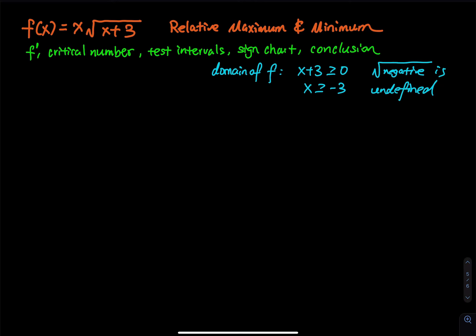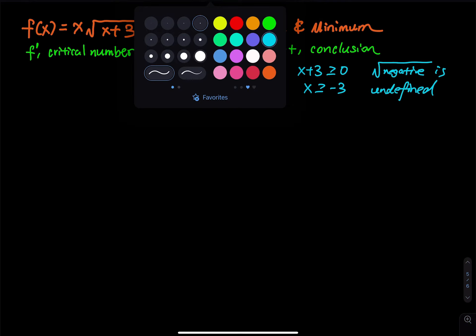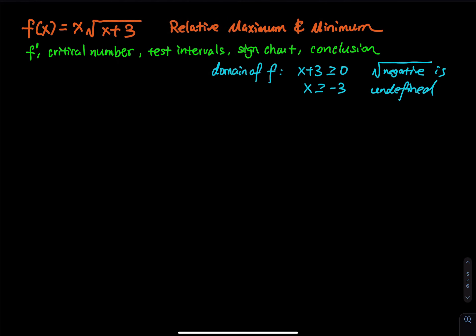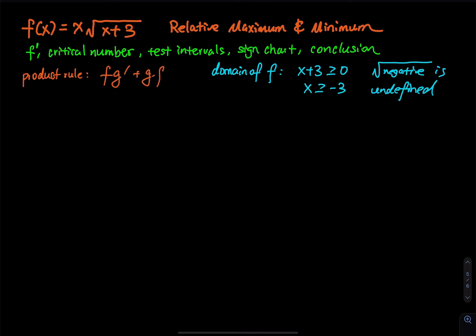The next step is to find f prime. We have f of x equals x times a square root term, so we have to use the product rule. The product rule states: if you have f times g, the derivative is f times g prime plus g times f prime.